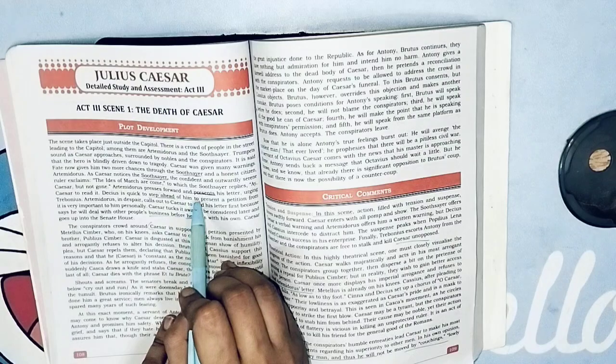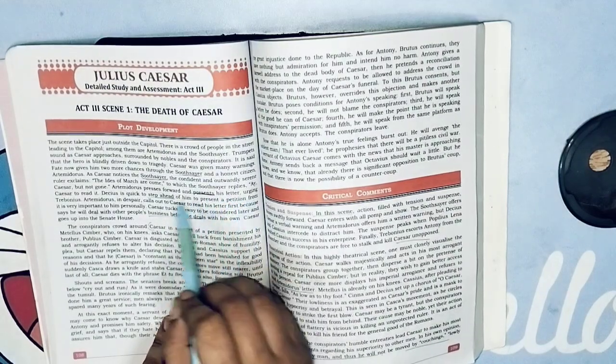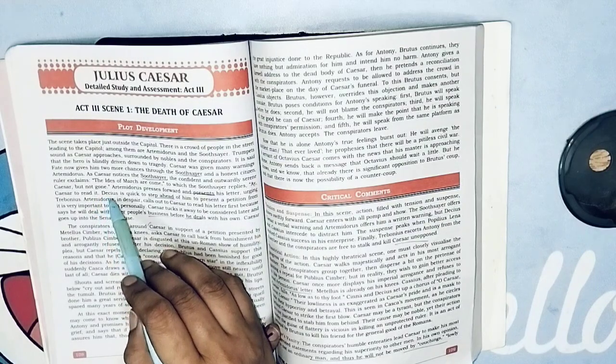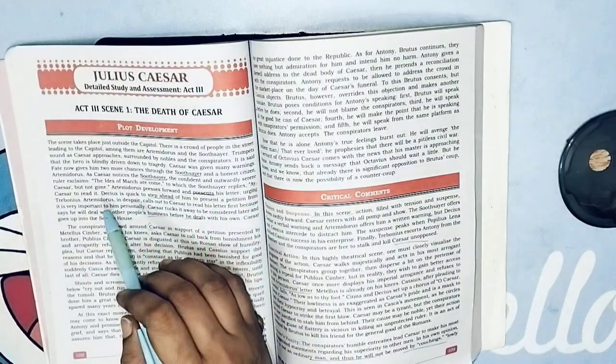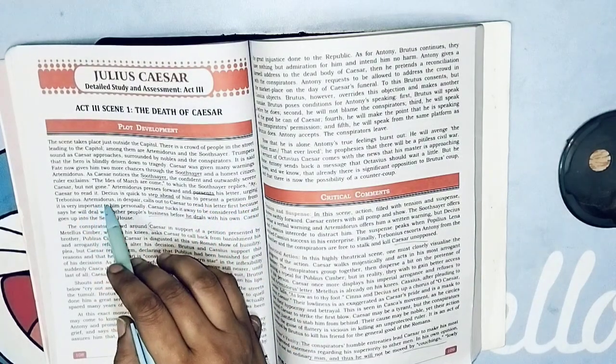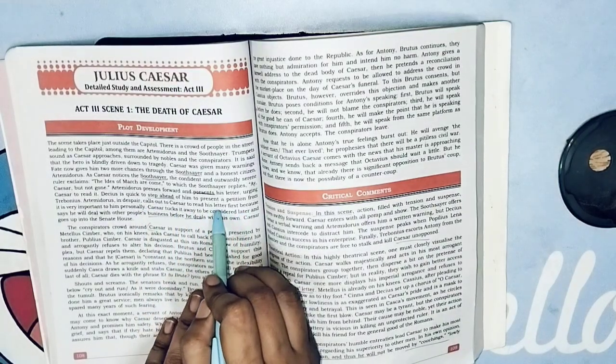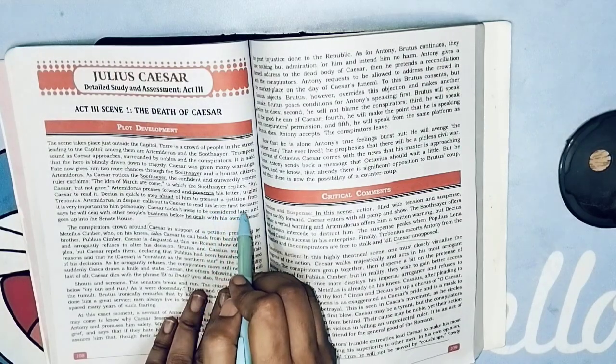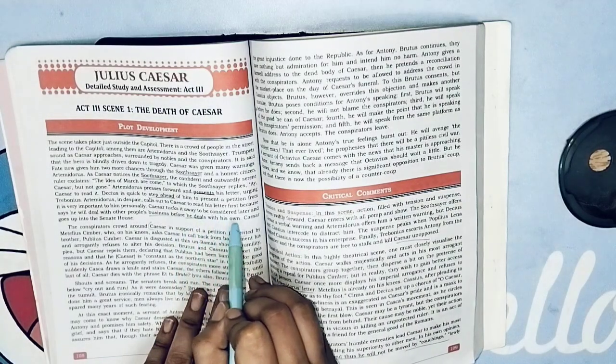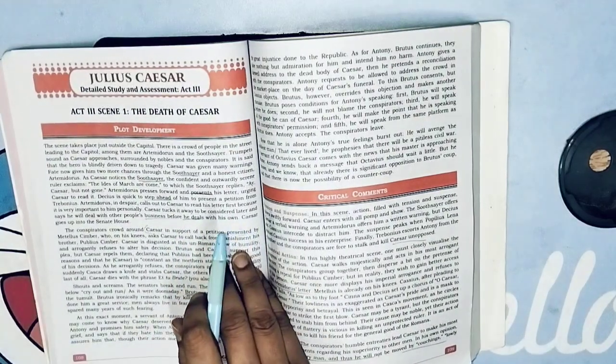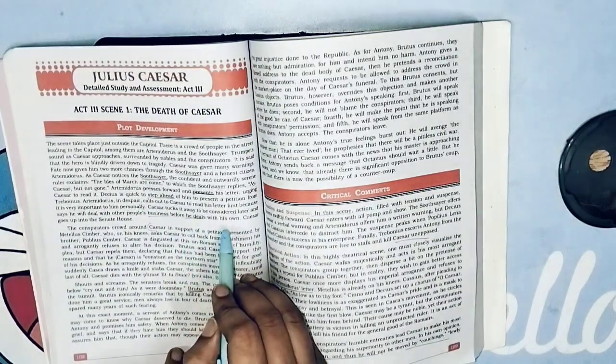Artemidorus presses forward and presents his letter, urging Caesar to read it. Decius is quick to step ahead of him to present a petition from Trebonius. Artemidorus in despair calls out to Caesar to read his letter first because it is very important to him personally. Caesar tucks it away to be considered later and says he will deal with other people's business before he deals with his own.